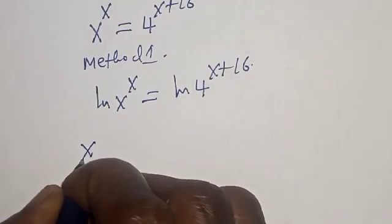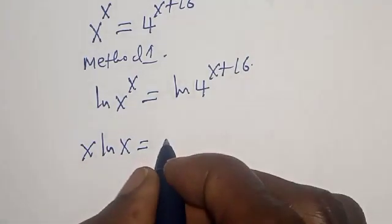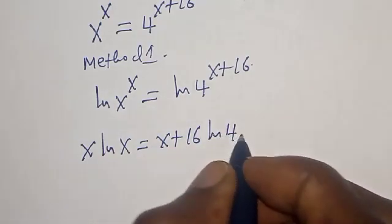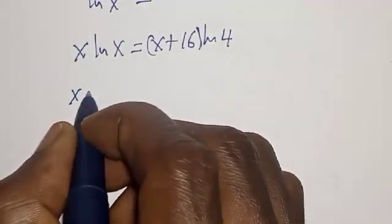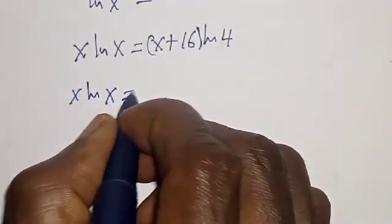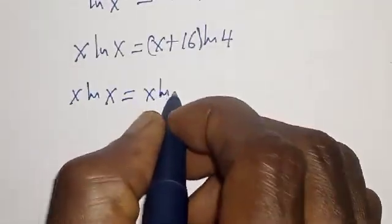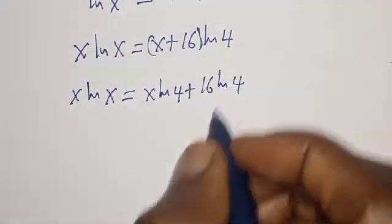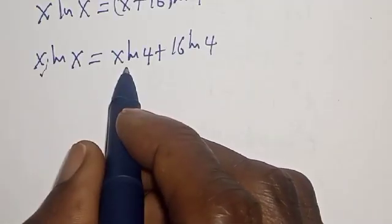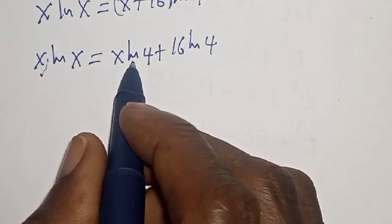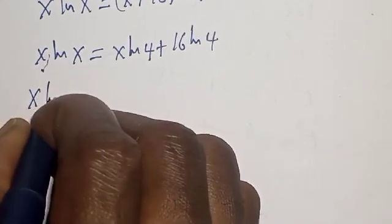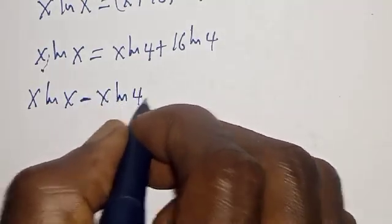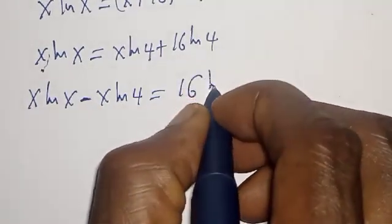Now we have x times natural log of x is equal to x plus 16 times natural log of 4. Let's expand the bracket: x natural log of x is equal to x natural log of 4 plus 16 natural log of 4. Bringing the x natural log of 4 to the left side: x natural log of x minus x natural log of 4 is equal to 16 natural log of 4.